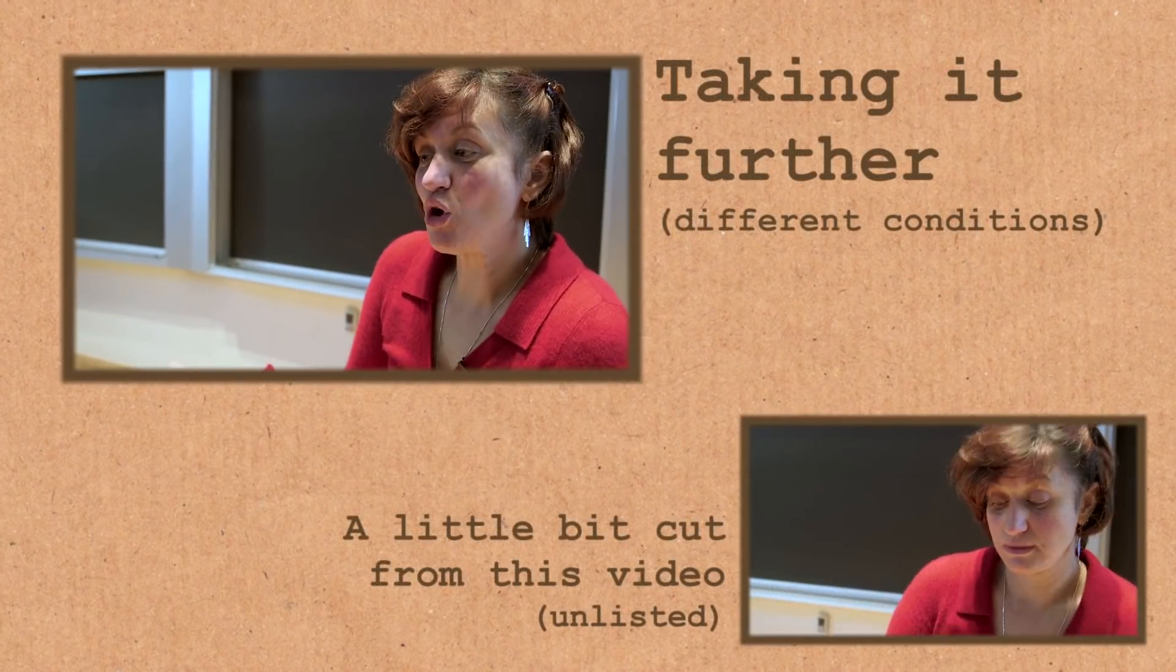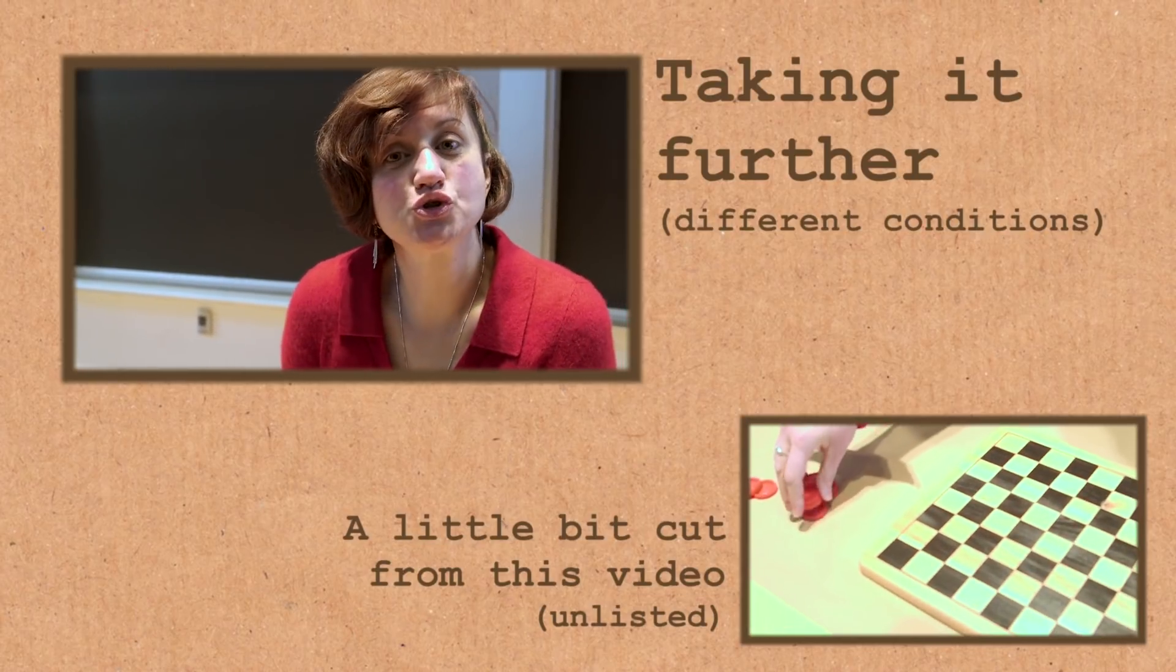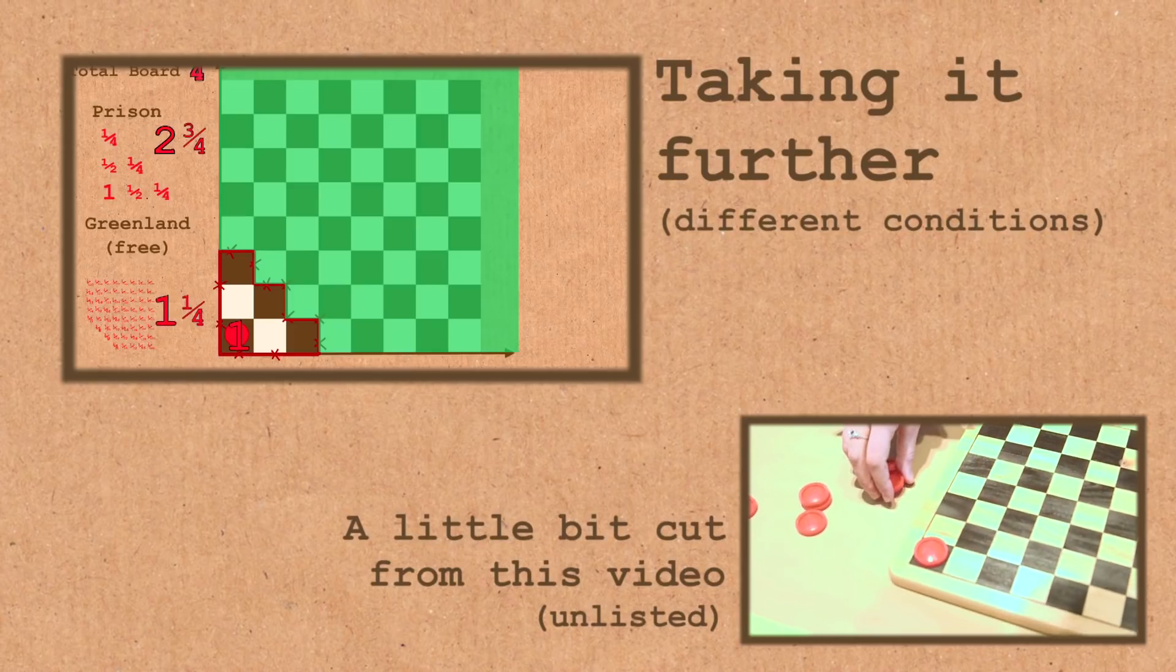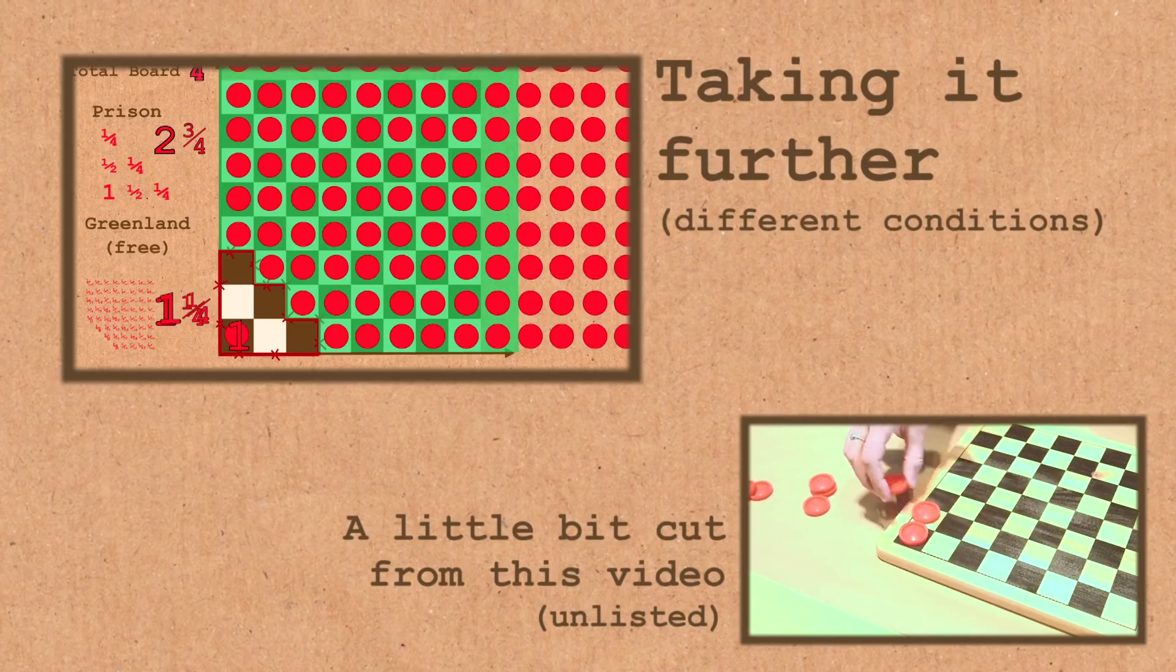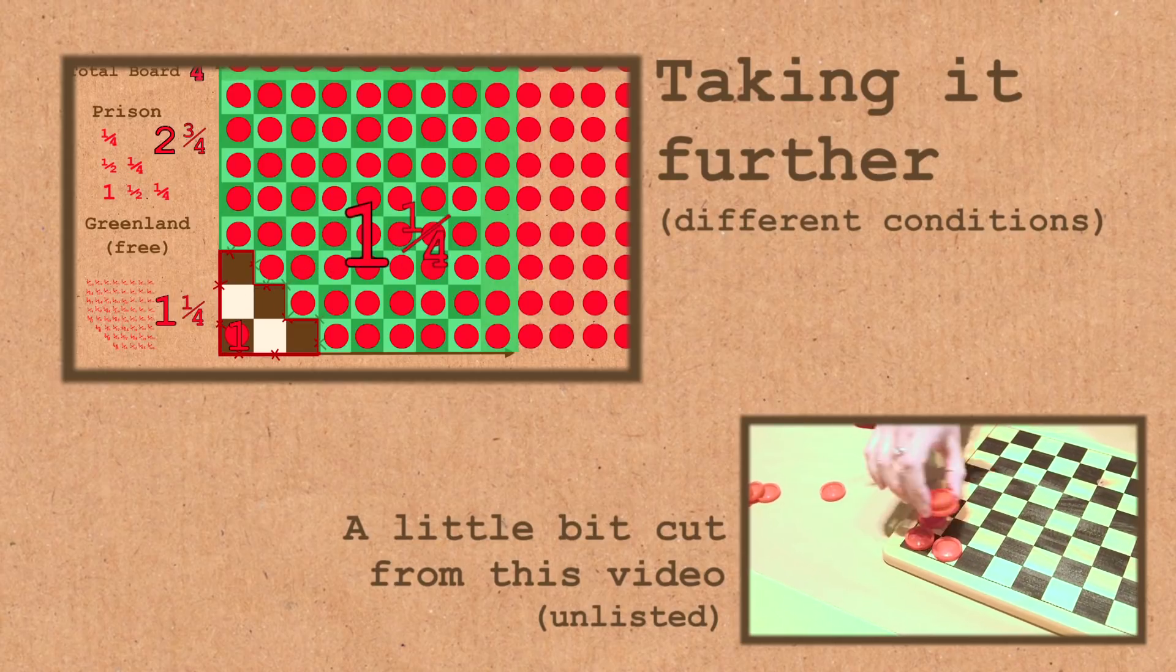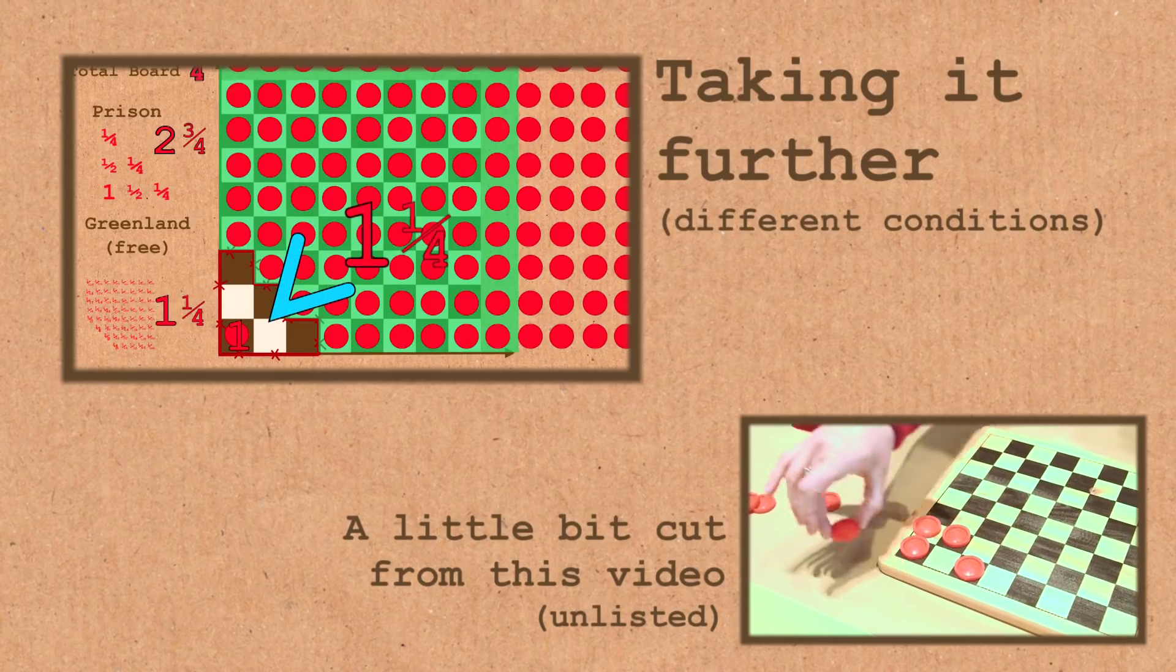So when mathematicians solve a problem, they don't really stop. They try to generalize it. They try to create new games, new problems and see if they are solvable or not.